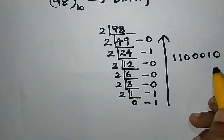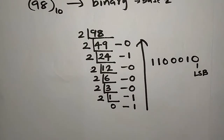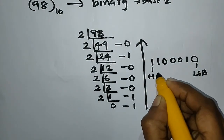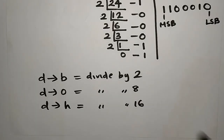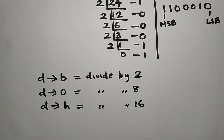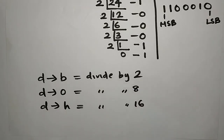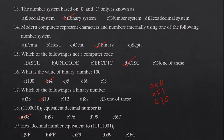You can use LSB (Least Significant Bit) or MSB (Most Significant Bit). LSB is the least significant bit and MSB is the most significant bit. For decimal to binary conversion, divide continuously by 2. For decimal to octal, divide by 8. For decimal to hexadecimal, divide by 16. The answer is option A and 98 is confirmed.